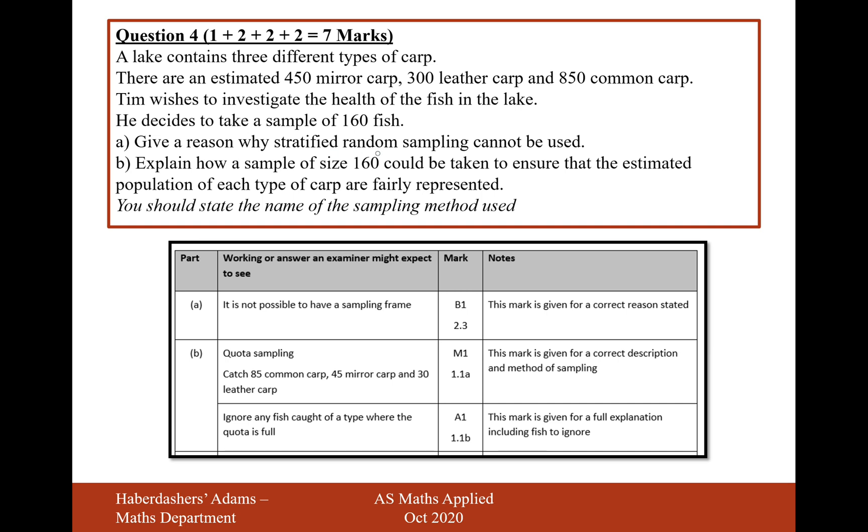Another reason why a stratified sampling can't be used is that we can't be sure that we're picking the fish out of the lake at random. We could be, if we're fishing for them, for example, we could just be catching those that are particularly prone to being caught or particularly hungry that day or particularly ravenous in general or weightier and throwing their weight around in terms of the other fish, making sure they get the bait and no one else does.